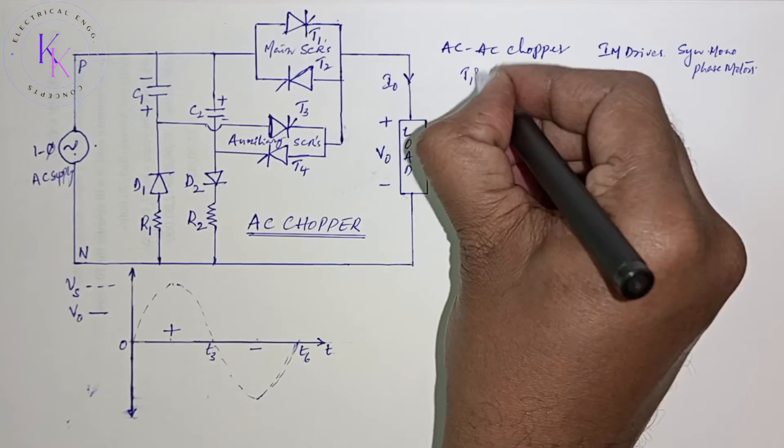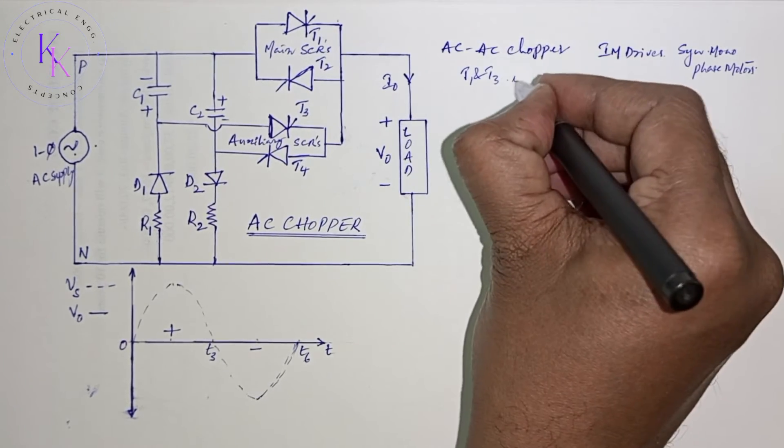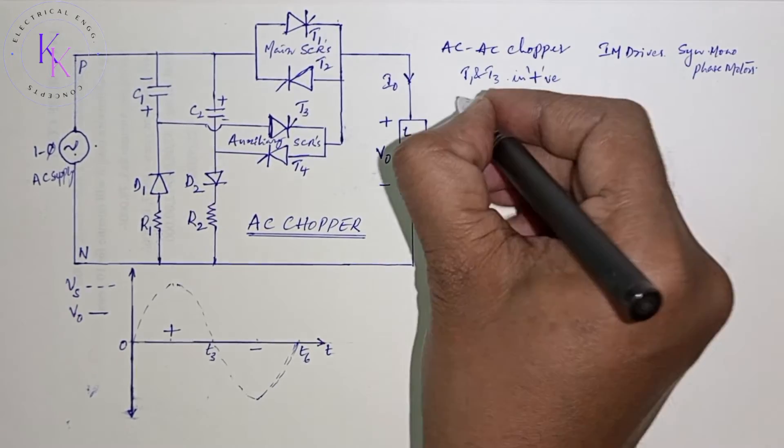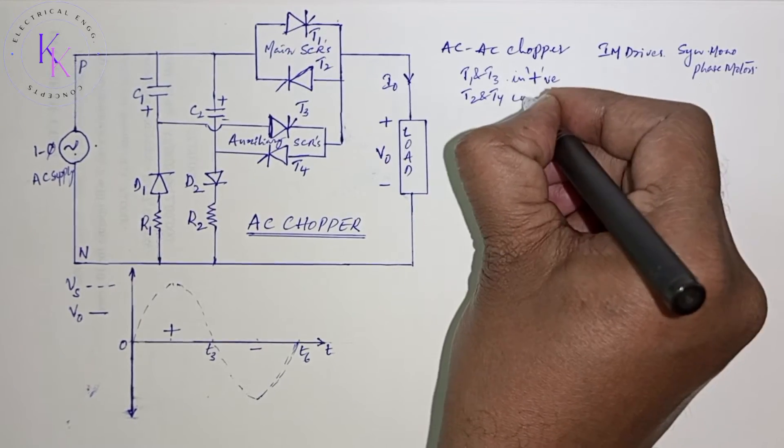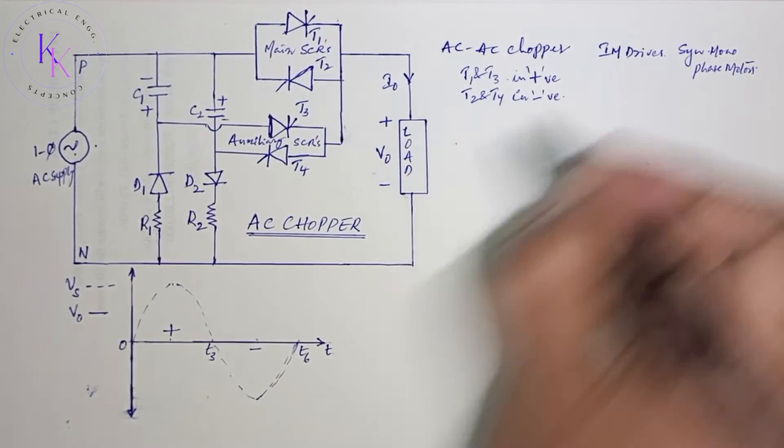T1 and T3 work in positive half cycle, and T2 and T4 work in negative half cycle.